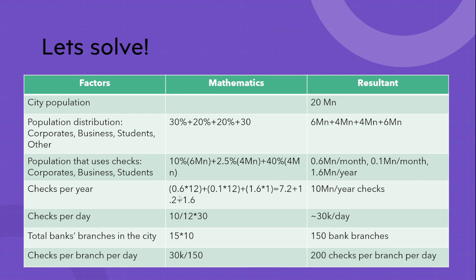The total checks per year: 0.6 million from corporates × 12 months, then 0.1 million from small and medium businesses × 12 months, and 1.6 million × 1 year because that is already annual. So we get 0.6 × 12 = 7.2, plus 0.1 × 12 = 1.2, plus 1.6 × 1 = 1.6, which sums up to 10 million checks per year.